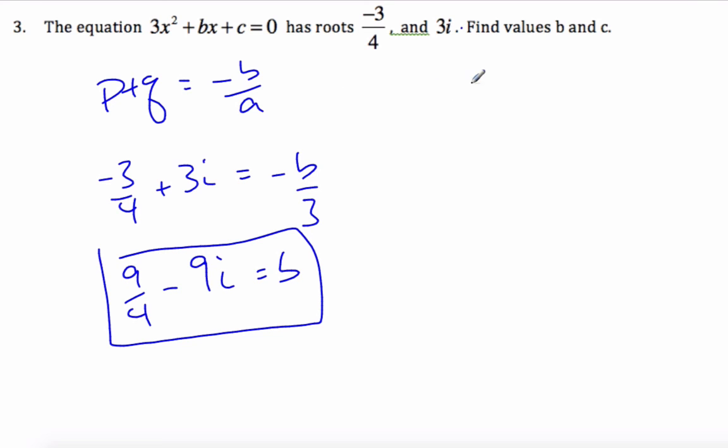Similarly, if I want to find c over a is equal to p times q. Well, c over 3 is equal to negative 3/4.